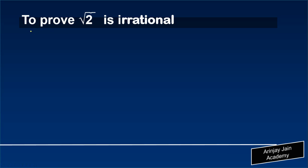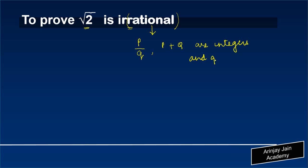In this video, we are going to prove that square root of 2 is an irrational number. Before we prove that, we will just recall what is a rational number. A rational number is a number which can be expressed in a form of P upon Q, where both P and Q are integers and Q is not equal to 0.